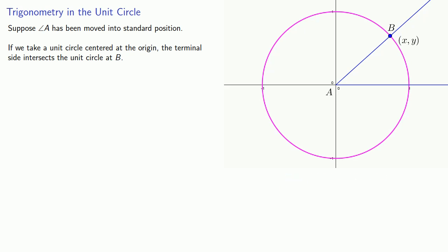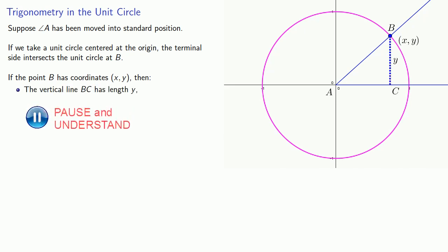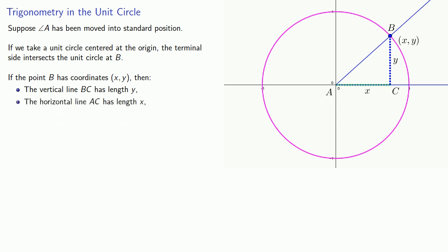Now let's consider those coordinates a little bit more carefully. If the point B has coordinates x, y, then this vertical line BC has length y. Likewise, this horizontal line AC has length x.